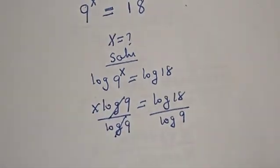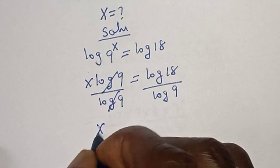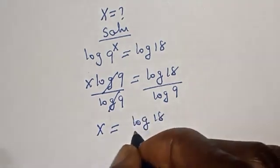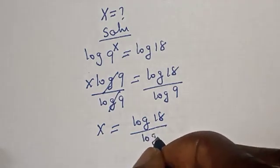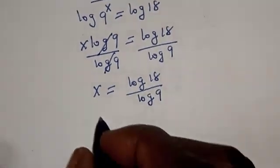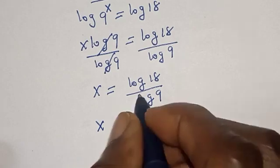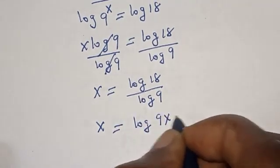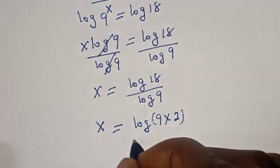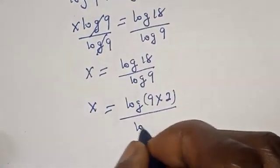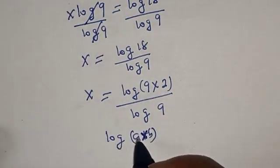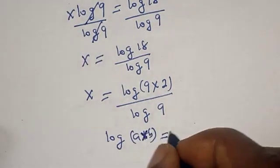x is equal to log 18 over log 9. Then x is equal to, 18 is log 9 times 2 over log 9. Remember, if you have log a multiplied by b, this is equal to log a plus log b.